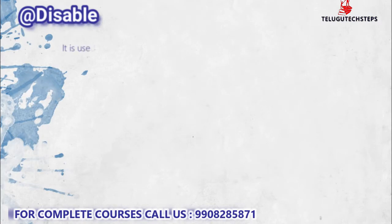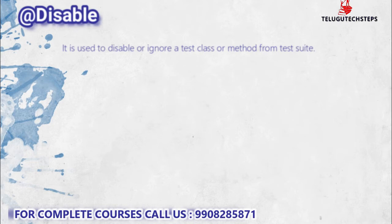The next annotation is @Disable. It is used to disable or ignore a test class or a particular method. If there is a particular method you want to ignore, you can add @Disable to ignore it. This annotation is just like a comment.